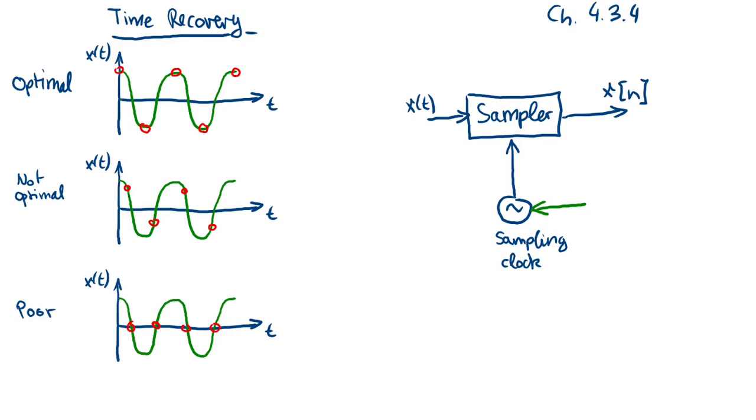The last point in the topic of sampling regards the timing of the sampling. We have discussed the Shannon-Nyquist theorem which said that the maximum frequency must be less than or equal to half of the sampling frequency.